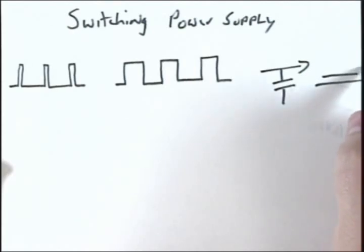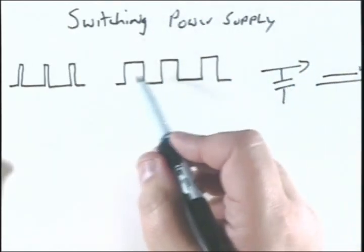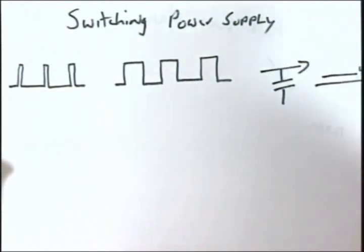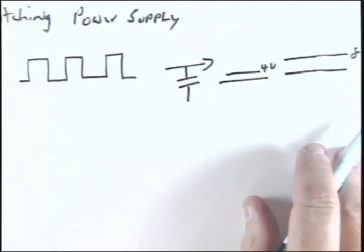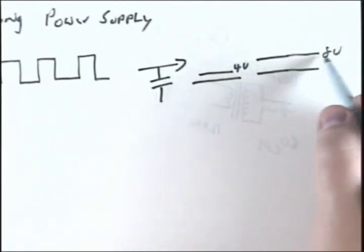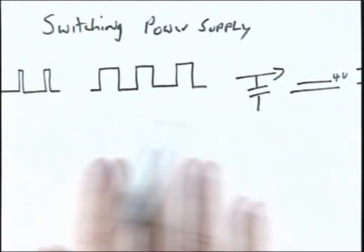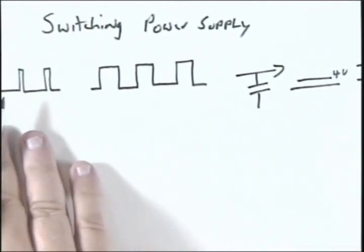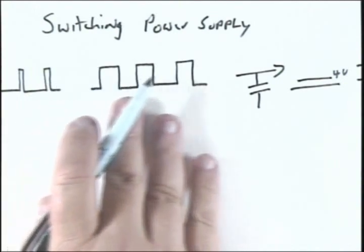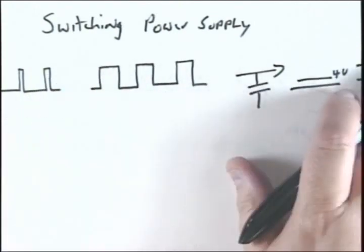It might be like four volts, whereas this one that is on longer is going to have a higher voltage because when it's filtered, it's going to have an average that's higher as far as the on time. That's the way that switching power supply works. It modulates the on time to control the output voltage.